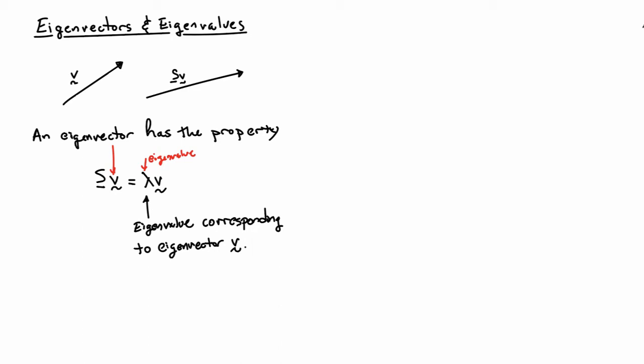For every special vector of s that has this property, it's going to have its own eigenvalue. I can rearrange the equation. I can bring everything to the left-hand side and factor out the v, and I have (s - λI)v = 0. So here I have a set of homogeneous equations that I need to solve if I want to figure out what the eigenvector is.